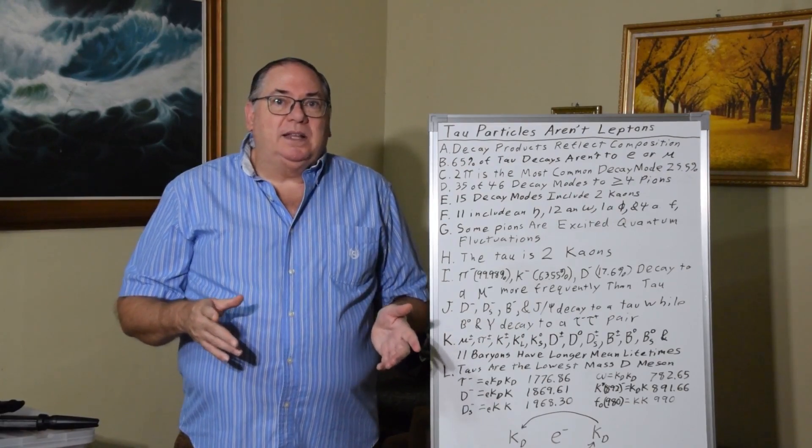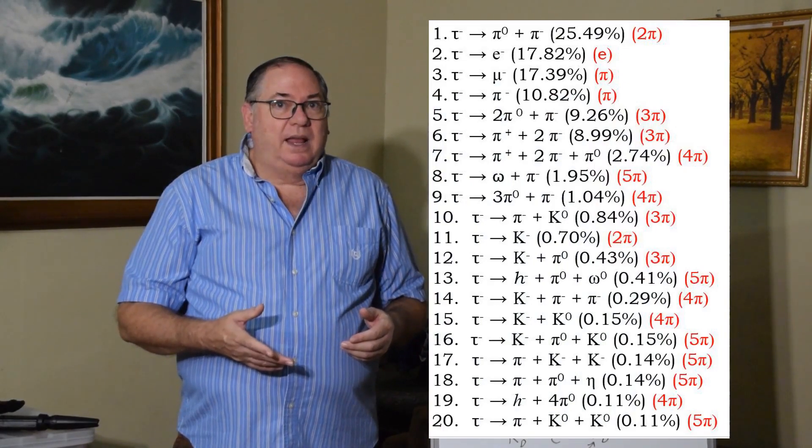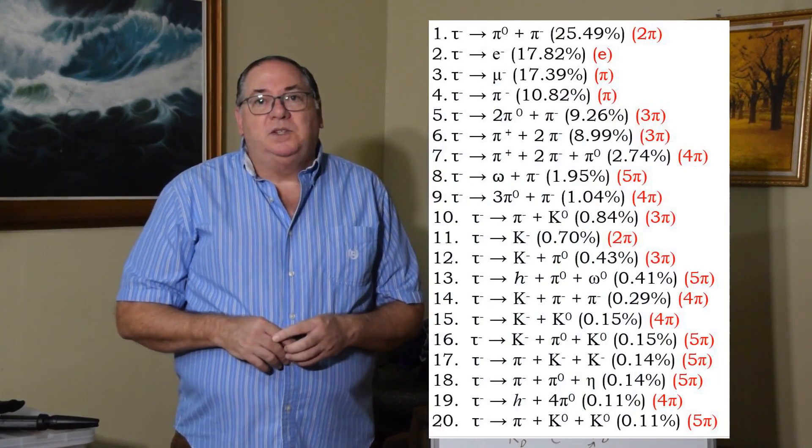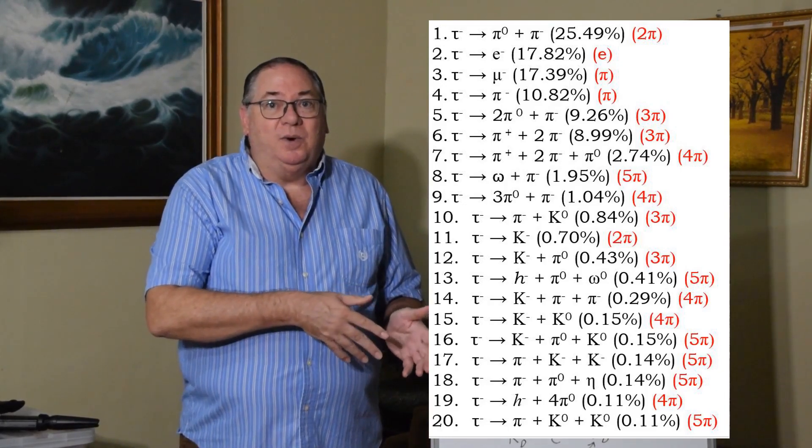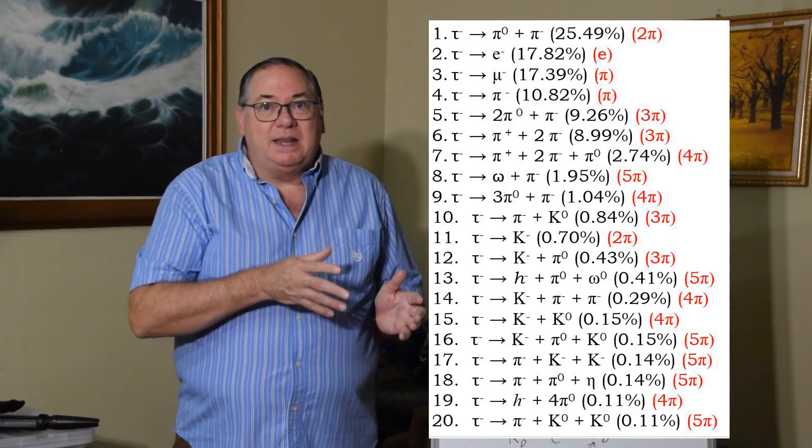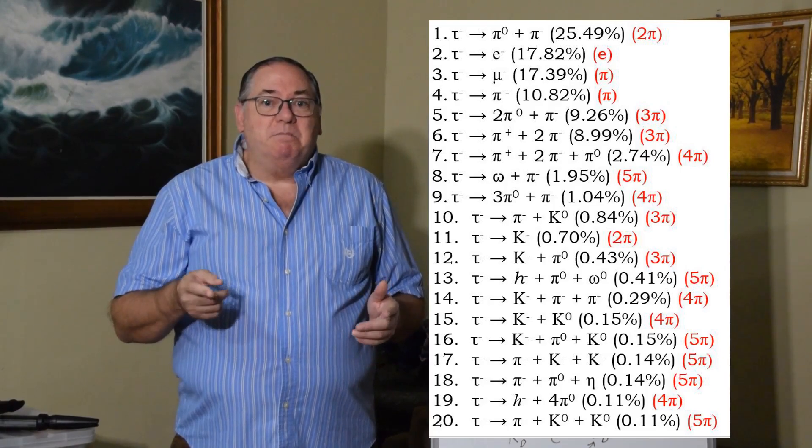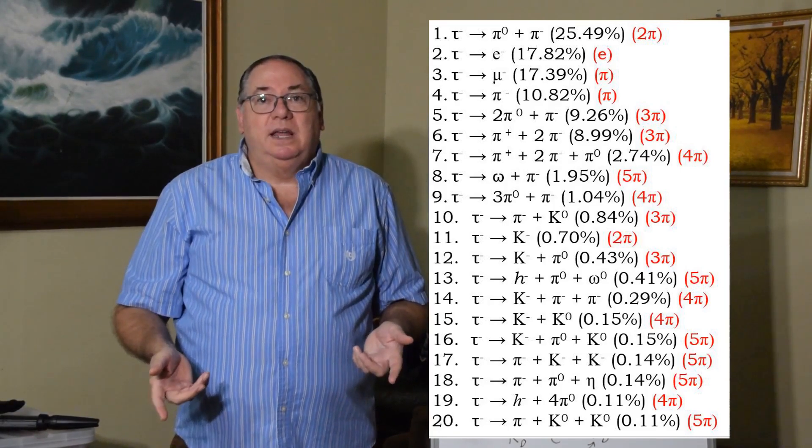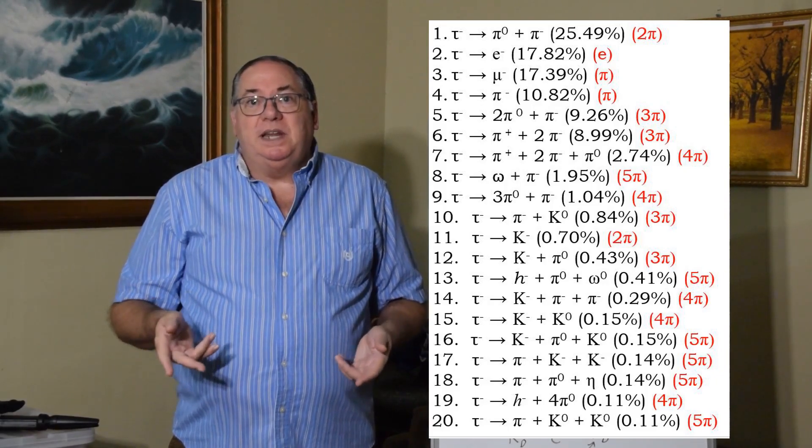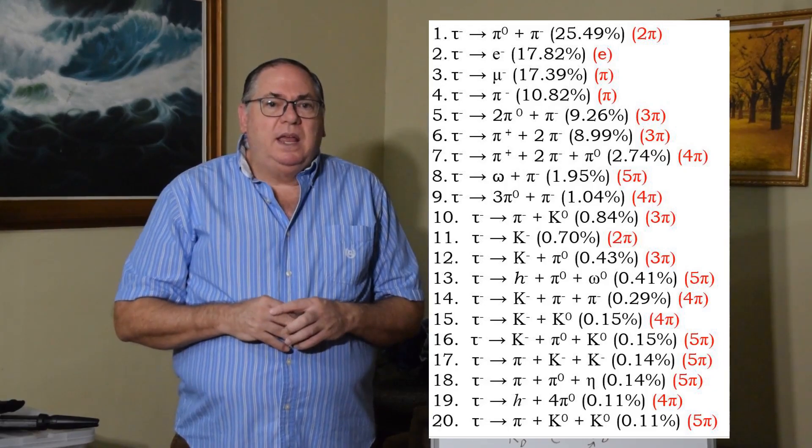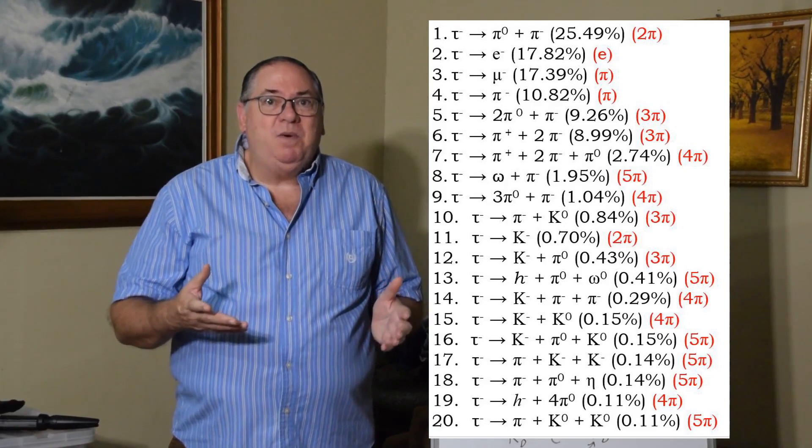And so what we find when we look at the decay modes of the tau is 65% of them are to something other than an electron or a muon. So the idea that it's a lepton and you may picture that a tau only decays to a muon or an electron or it comes from an excited muon or an electron, no, that's not true at all. In fact, the most common decay mode is to two pions, 25% of the time, while it decays to an electron or a muon a little over 17% of the time, so about 35% total.